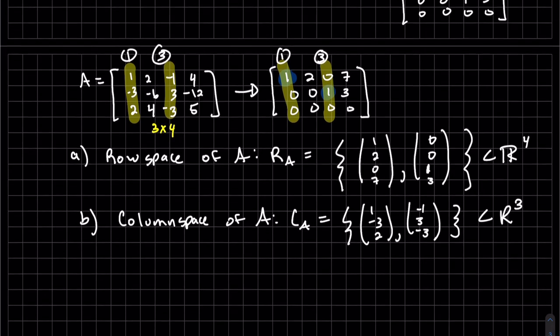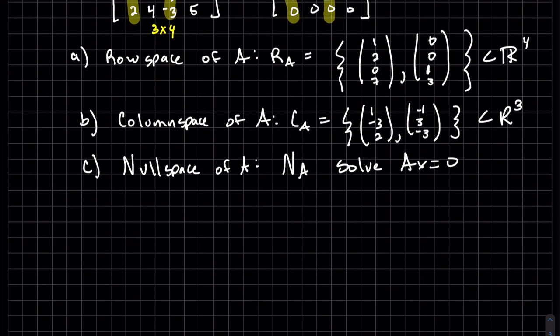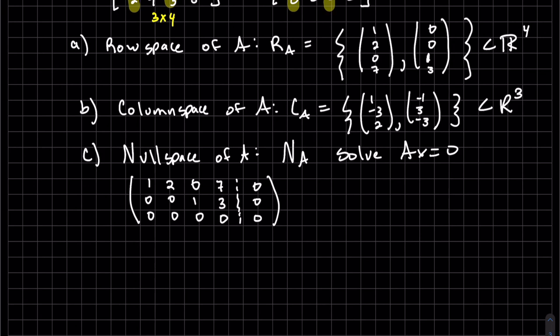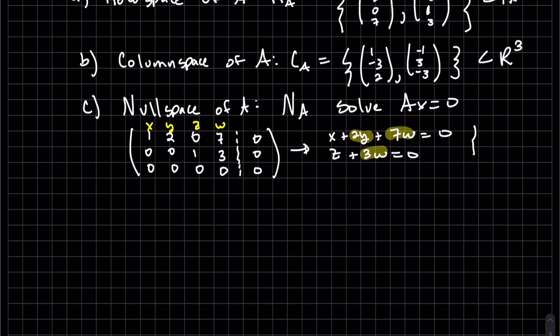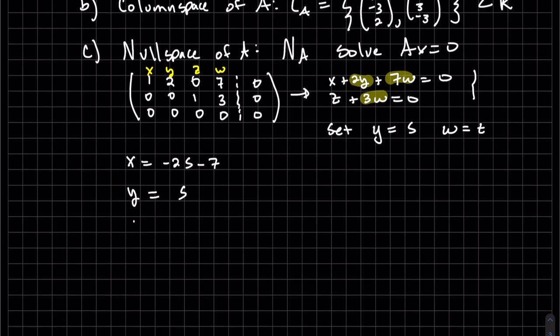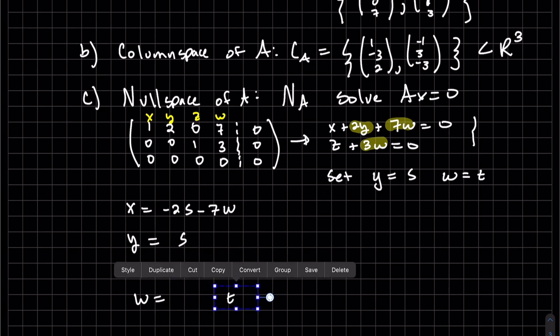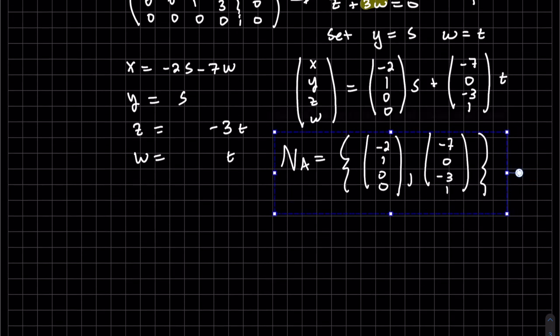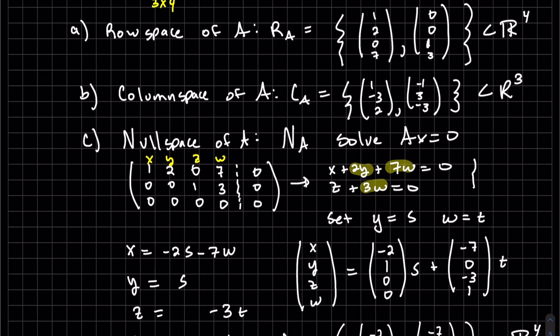Talk about that next section. And last but not least, our null space of A, call it NA, and we solve AX equals 0, the homogeneous solution. Well, we can basically augment our row reduced space. Since this is reduced as much as we can, we're going to go ahead and write out our equations. I'll go ahead and call this row X, Y, Z, W. So you can see we're going to set those two as our parameters. Which is the same space as our row space, R4.